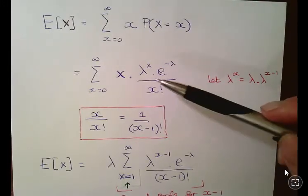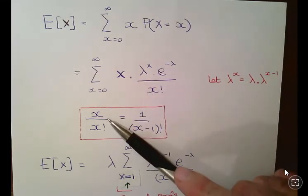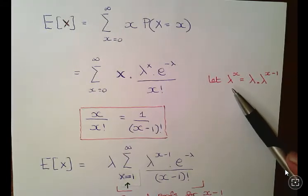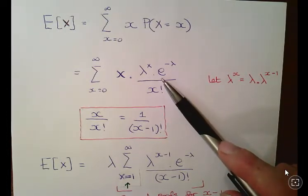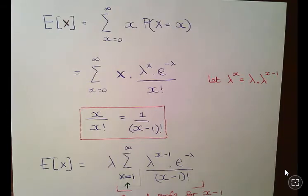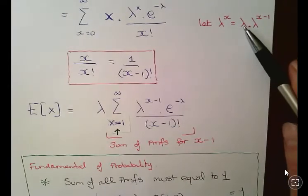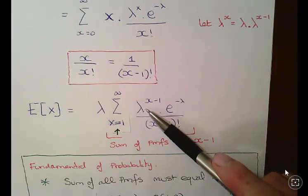What we're going to do is divide x by x factorial to get 1 over x minus 1 factorial. There are two tricks here: we express lambda to the x as lambda times lambda to the x minus 1. We factor out lambda, and x cancels out with x factorial to leave x minus 1 factorial. So it's desirable to work in terms of x minus 1 rather than x. The reason for that will become clear.